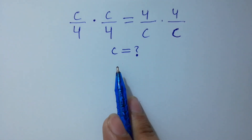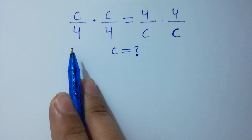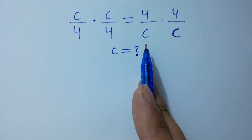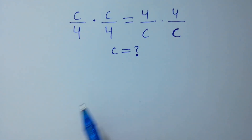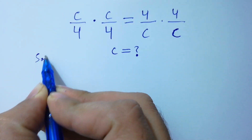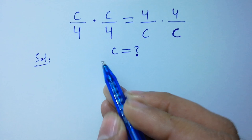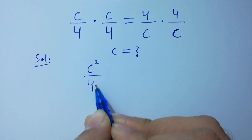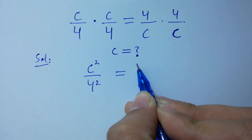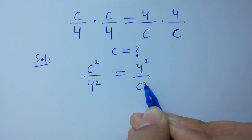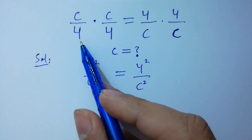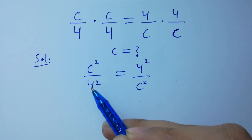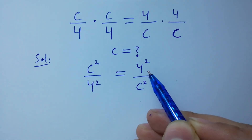Hello friends. Find the value of c if (c/4) times (c/4) equals (4/c) times (4/c). Let's have a solution. This is the same as c squared over 4 squared equals 4 squared over c squared, because both factors have power 1. That's why you can write c squared over 4 squared equal to 4 squared over c squared.